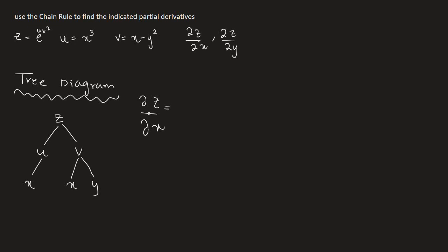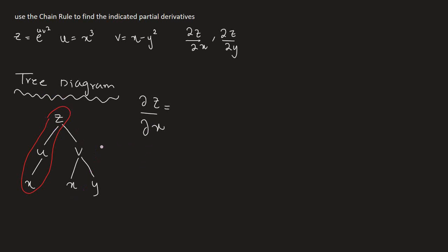Now let's find this derivative. We are finding it with respect to x. So in the tree branches, where do you see x? If you go this direction, you can find z with respect to x. But here as well you see x. So if you go through this branch, you can find it there too. So you can find it going both through the u branch and through the v branch.